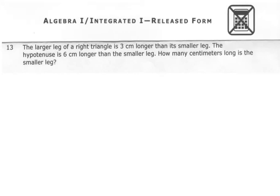Number 13. The larger leg of a right triangle is 3 centimeters longer than its smaller leg. The hypotenuse is 6 centimeters longer than the smaller leg. How many centimeters long is the smaller leg?